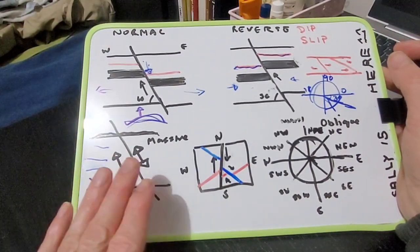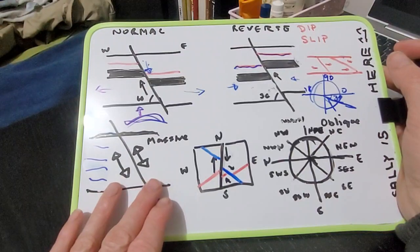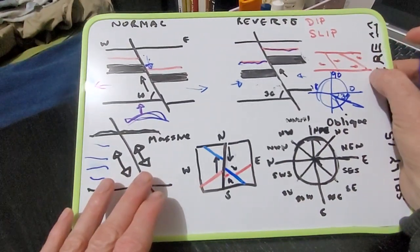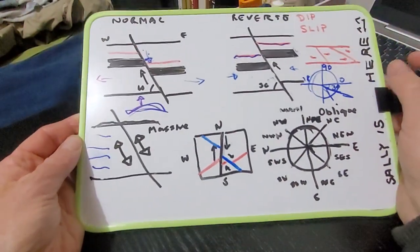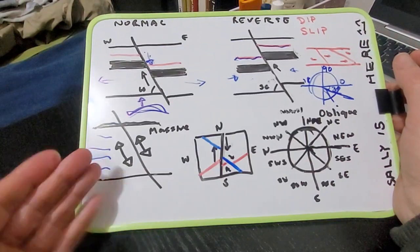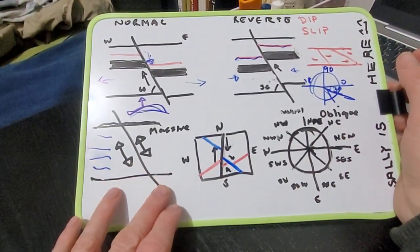So in the massive rock, even though there is movement, both sides, you're not too sure which side has moved up and which side has moved down. So it's a bit hard to interpret the actual rock fracture.